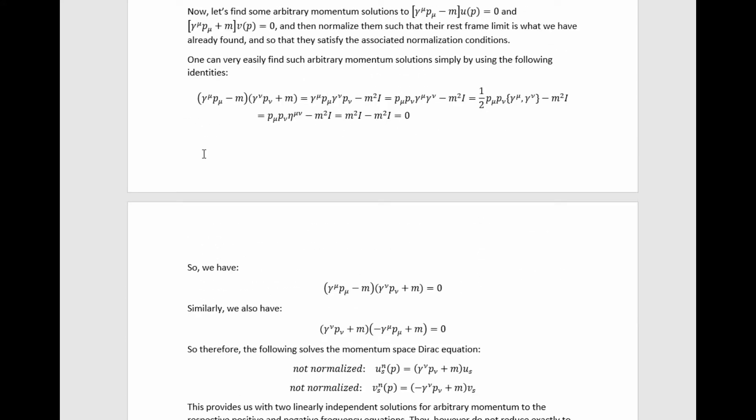One can easily find arbitrary momentum-dependent solutions if we recognize this identity here and this identity here. Now, the proof of this identity is very similar to this one, so I only bothered to write out the proof of this one. So if we multiply this through, we arrive here,